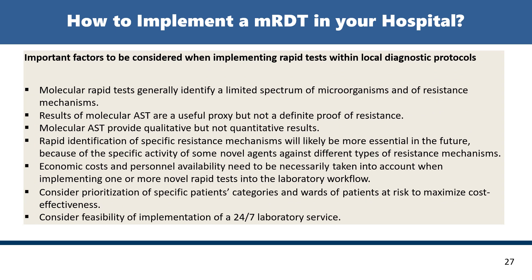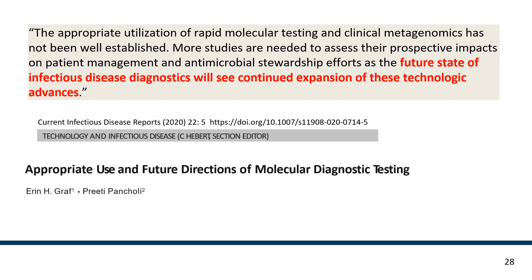Multiple rapid tests generally identify a limited spectrum of organisms and resistance mechanisms. The results are useful proxies but not definitive proof, providing qualitative but not quantitative results. Rapid identification will likely be more essential in the future; economic cost and personnel availability need to be addressed. Consider prioritization of specific patient categories. The appropriate utilization of rapid molecular testing and clinical metagenomics has not been well established, and more studies are needed.